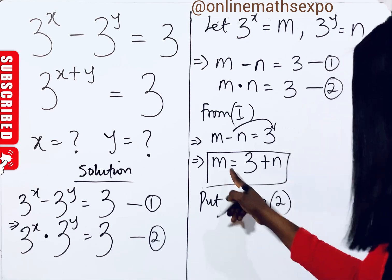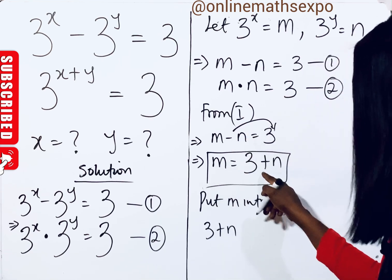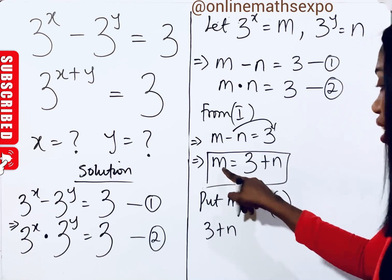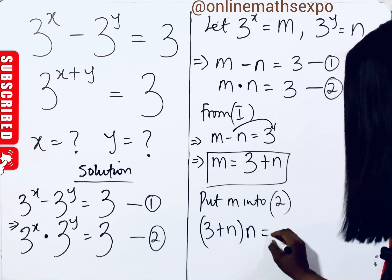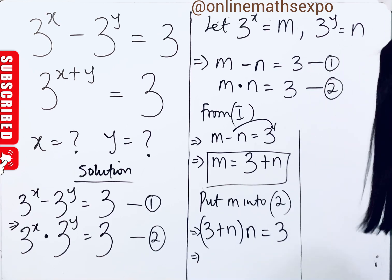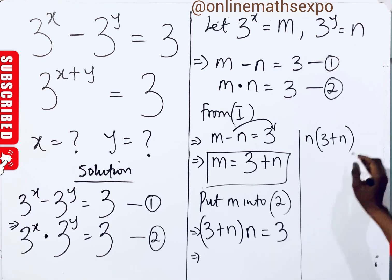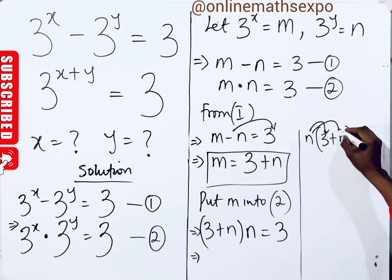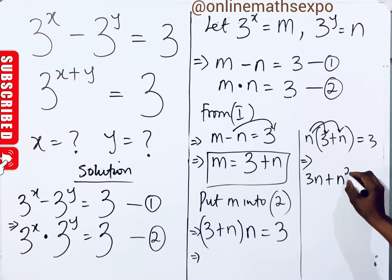Substituting into equation 2, instead of writing m we write 3 plus n, put it in brackets, then multiply by n equals 3. We can rewrite this as n times (3 plus n) equals 3. Expanding: this gives us 3n plus n squared equals 3. You observe that this is leading to a quadratic because the highest power of n is 2.